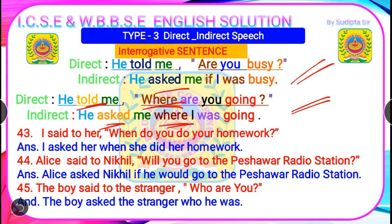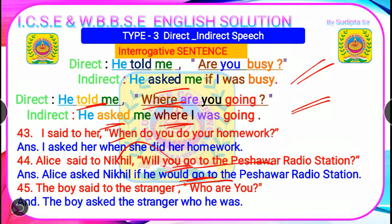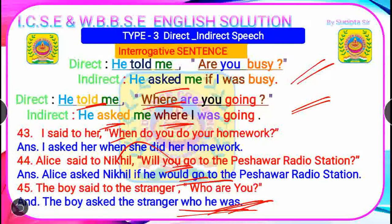More interrogative examples. Question 43: 'I said to her, when do you do your homework?' — wh-question. Answer: 'I asked her when she did her homework.' Question 44: 'Alice said to Nakil, will you go to the password radio station?' — yes/no question. Answer: 'Alice asked Nakil if he would go to the password radio station.' ('Will' → 'would' as future tense transfers to future in the past.) Question 45: 'The boy said to the stranger, who are you?' Answer: 'The boy asked the stranger who he was.' (Written as 'who he was' — assertive order, not 'who was he.')